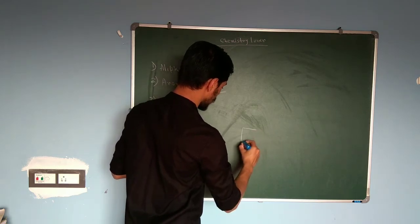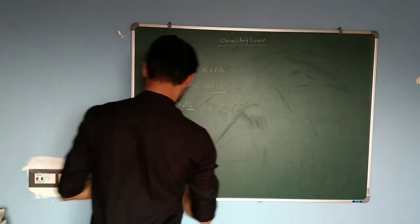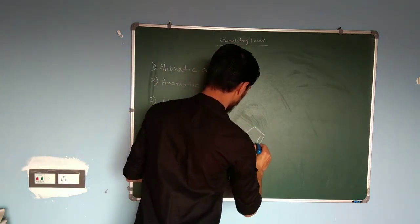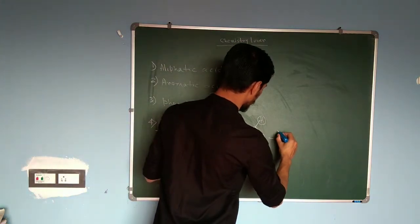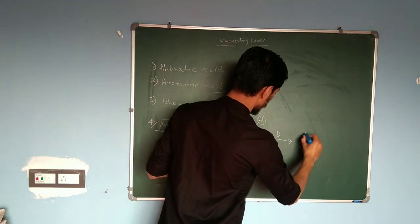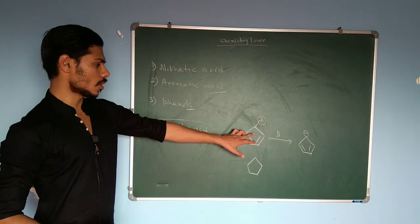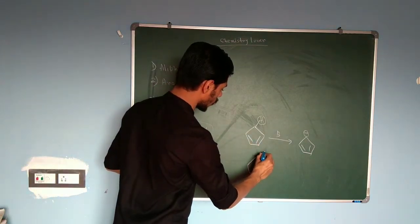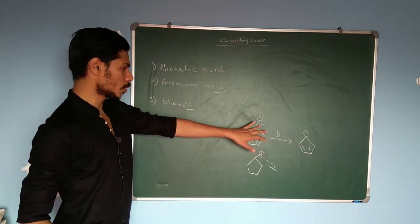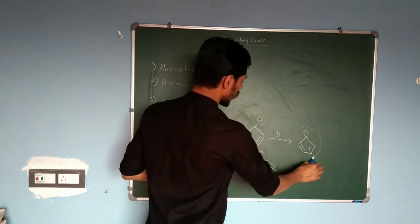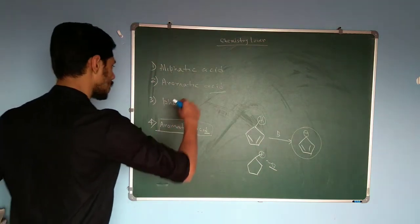For example, consider cyclopentadiene. This proton is acidic in nature — you can deprotonate it with a base. If you compare cyclopentane with cyclopentadiene, the pKa of the cyclopentane proton is around 40–43, whereas this pKa is less than 20. You can easily deprotonate this proton because the conjugate base is aromatic in nature. That is what we mean by aromatic acid in this fourth category.